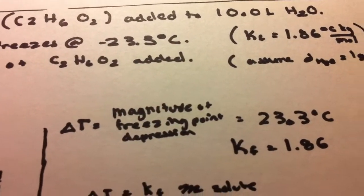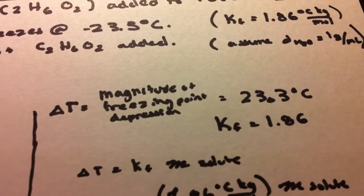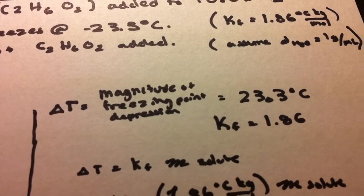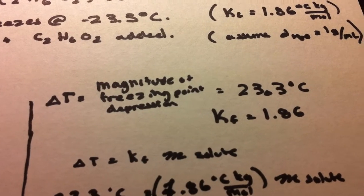But of course, some other books say that delta T refers to the magnitude of the freezing point depression. Now because delta T is now positive,